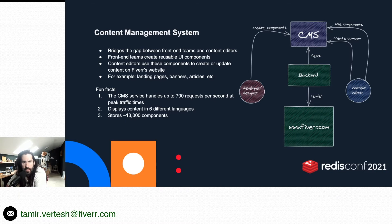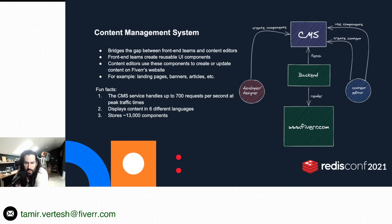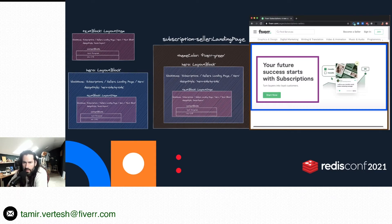So what's a content management system? Basically it's a system that bridges the gap between front-end teams and content editors. Developers and designers can create components, which then non-technical content editors can use to create new content like landing pages, banners, articles, and so on. The backend can then fetch and render these components on the Fiverr website. The CMS service handles up to 700 requests per second at peak traffic, displays content in six different languages, and stores about 13,000 components.